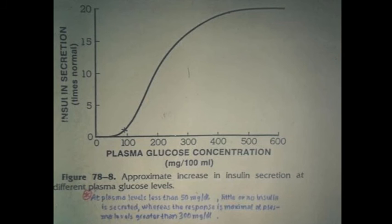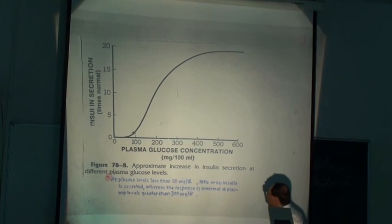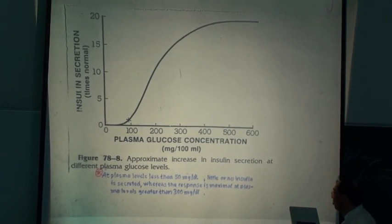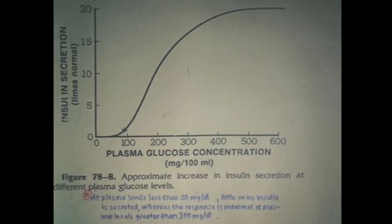You see here, you see plasma glucose concentration and insulin secretion. At plasma levels, this is 50 mg, little or no insulin is secreted. You see when plasma glucose level is too low, almost no insulin is secreted. Whereas the response is maximum at plasma levels greater than 300. As you see. But I think the increase in the level of insulin secretion stops at level 500 mg per 100 ml.